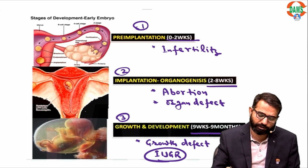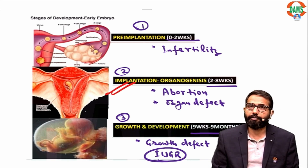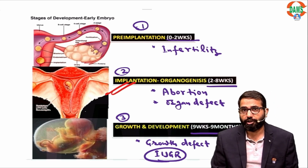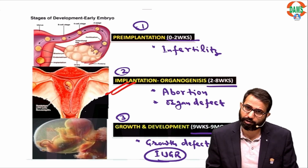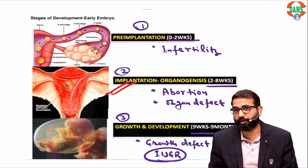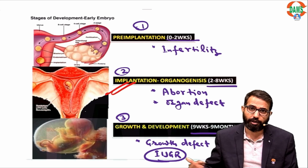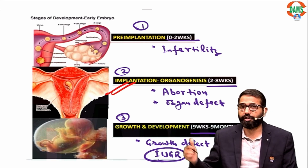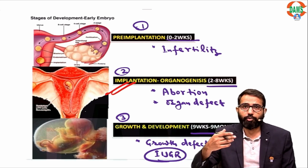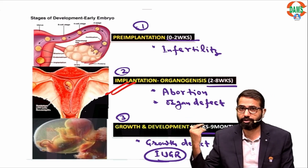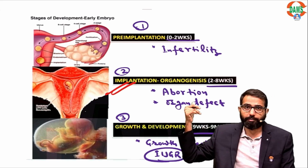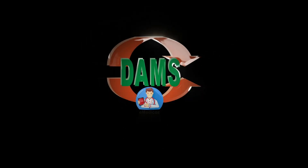Most commonly you will see the second one — implantation issue and organogenesis. For infertility, many patients don't have an idea it is because of the drug, so they don't report it. For IUGR, most patients are already warned not to use the drug, so it is less common. But this second category — organogenesis defects — occurs very commonly by mistake.